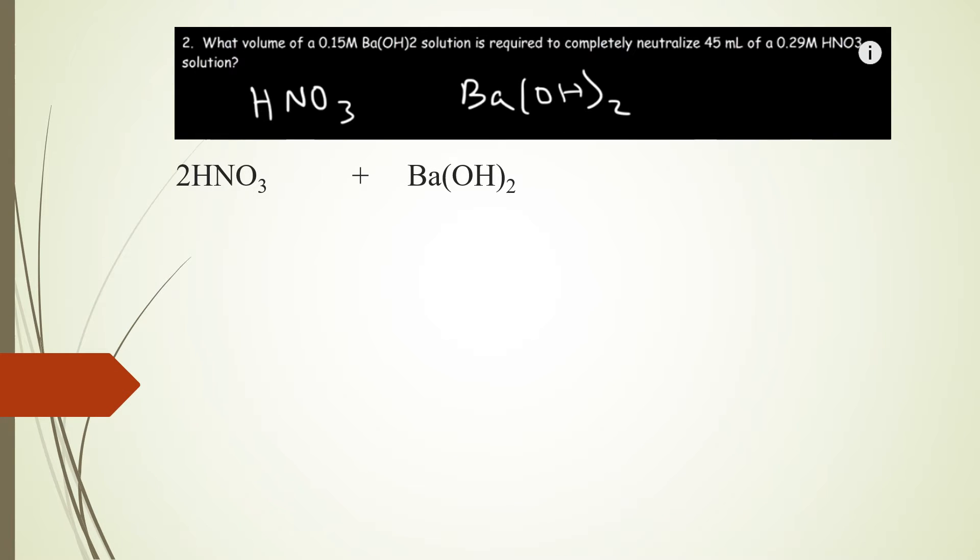What volume of a 0.15 molar barium hydroxide solution is required to completely neutralize 45 ml of a 0.29 molar nitric acid solution? First, we need to consider that nitric acid and barium hydroxide are ionic compounds.